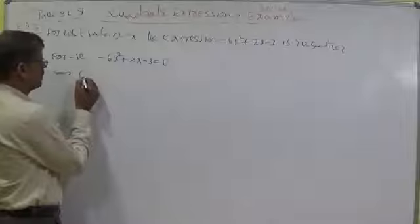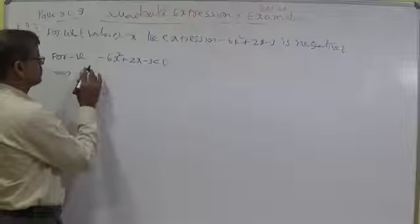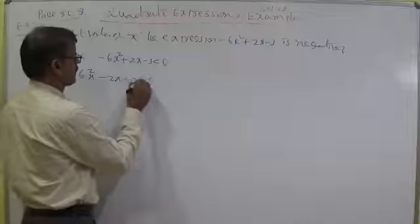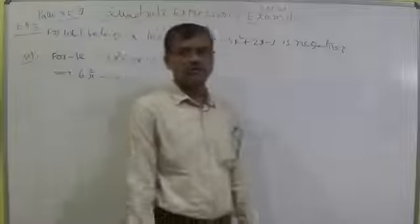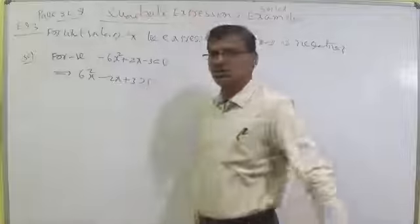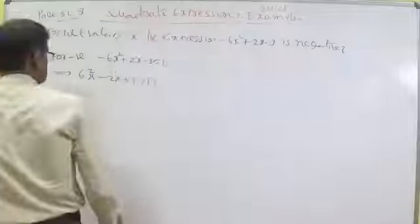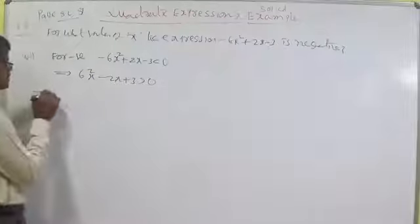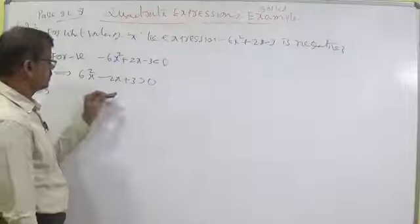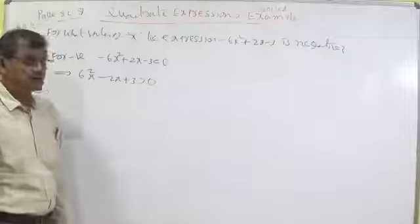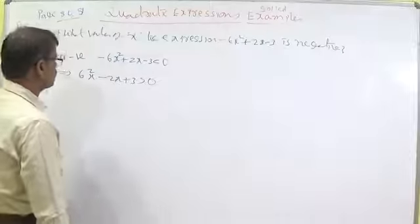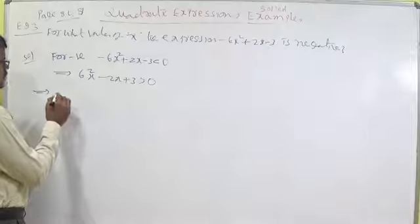Multiply both sides by minus — it becomes 6x² minus 2x plus 3 greater than 0. Whenever you multiply both sides by minus, the inequality symbol changes: greater than becomes less than and less than becomes greater than. 6 times 3 is 18; try to convert into factors, but there is no factor to get the middle term as 2.